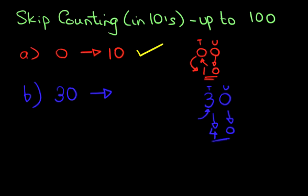That remains as it is. So therefore, the number after 30 when counting in tens is 40.